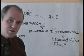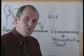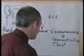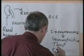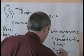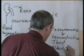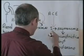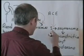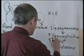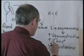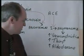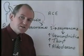Angiotensin 2 will also increase the amount of another hormone being produced called aldosterone. So you get increased vasoconstriction, increased thirst, and increased release of the hormone aldosterone.